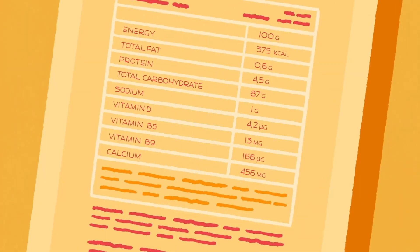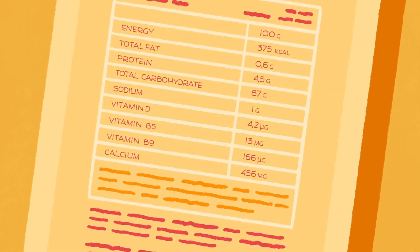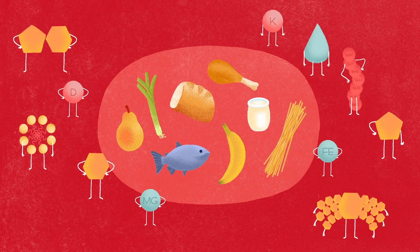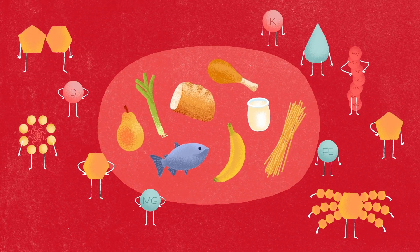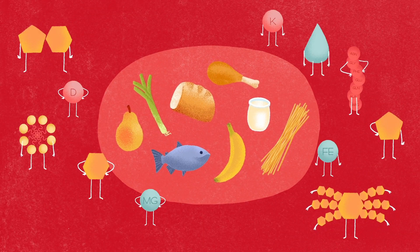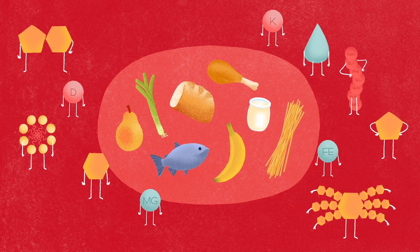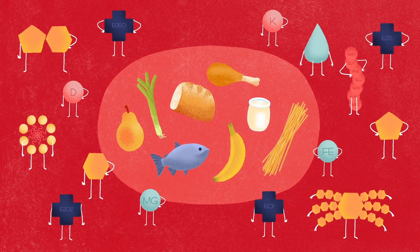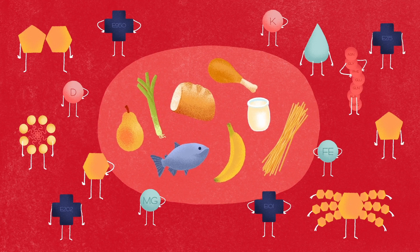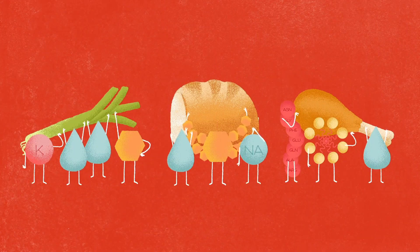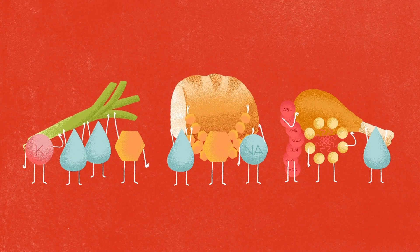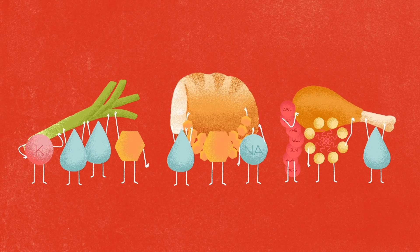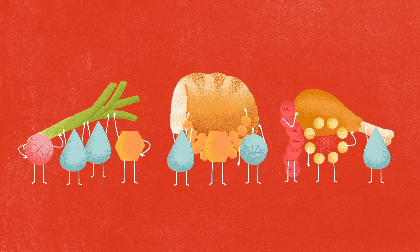So there you have it Jack. The mystery of the cereal box is solved. Food is mainly composed of many nutrients that provide the different elements and the energy our bodies need to function. Sometimes, technological additives can also be added. In any case, all foods have a different nutritional composition, so diversifying and balancing our diet is key.